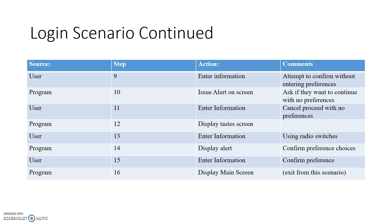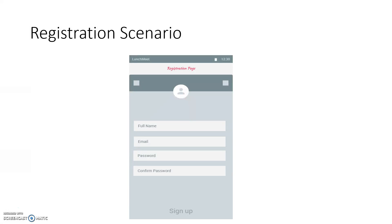At step nine, the user enters information — he tries to get past the preferences screen without entering any preferences. So at step ten, the program issues an alert to see if they want to continue with no preferences. At step eleven, the user cancels and says not to proceed. At step twelve, the program displays the taste screen again. At step thirteen, the user enters his preferences using the radio switches. The program displays an alert confirming his preferences. At step fifteen, the user confirms his preferences, and at step sixteen, the program displays the main screen. We exit from this scenario.